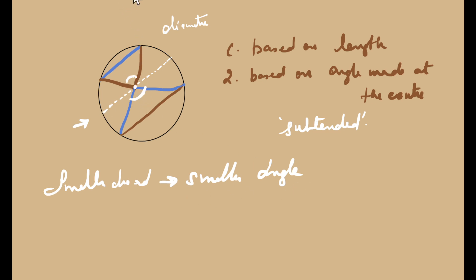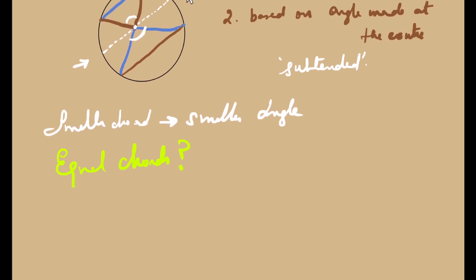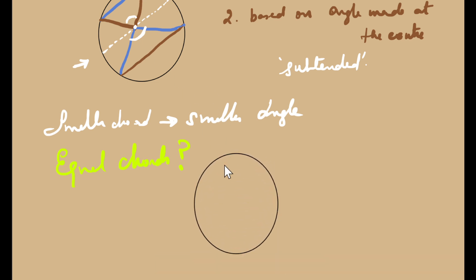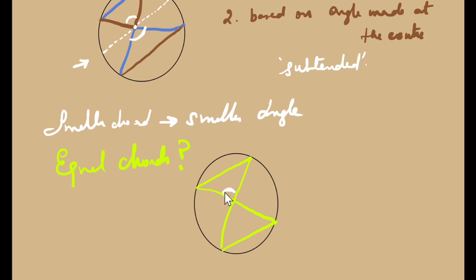What about equal chords? What would happen to the angles when the chords are equal? Let us consider another circle to explore this. If the chords are equal, what would happen to the angle subtended at the centre? Let me take two chords and assume they are equal in length. If I connect the ends of each chord to the centre, I get the angle subtended — the first triangle on top and the triangle below.